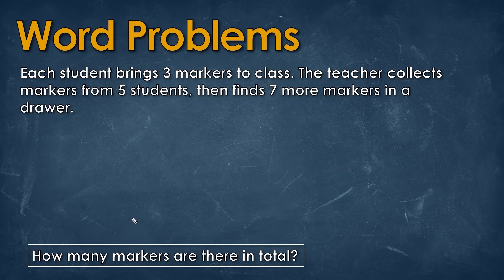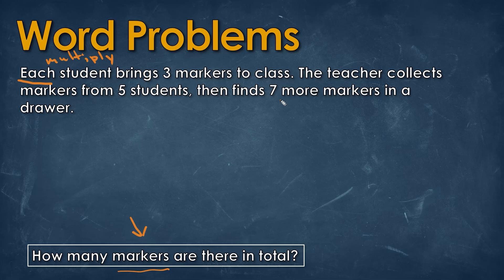Looking at the next question, we look at the last sentence to figure out what we're trying to find — how many markers there are in total. Reading the question, we see the word 'each,' which tells us we're going to be multiplying some values together. We also see the word 'more,' and this usually means we're going to be adding.